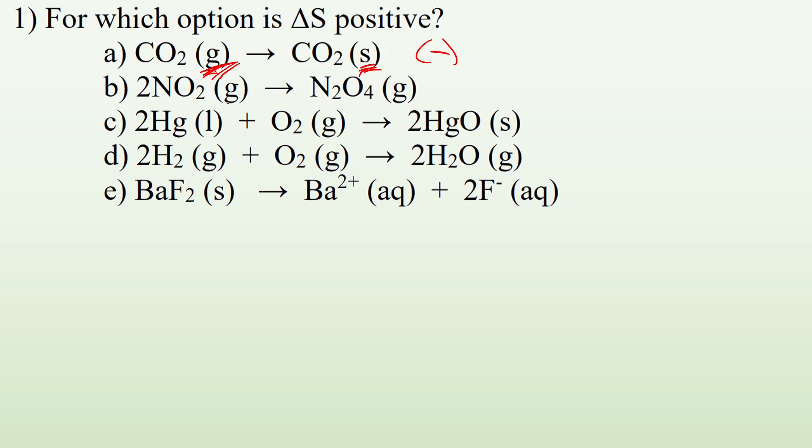What about 2NO2 gas becoming N2O4 gas? So we start with two different things and then we end up with just one type of thing. Well, that is a decrease in entropy. It's becoming more organized. There's only one kind of thing as opposed to a mixture of two things.